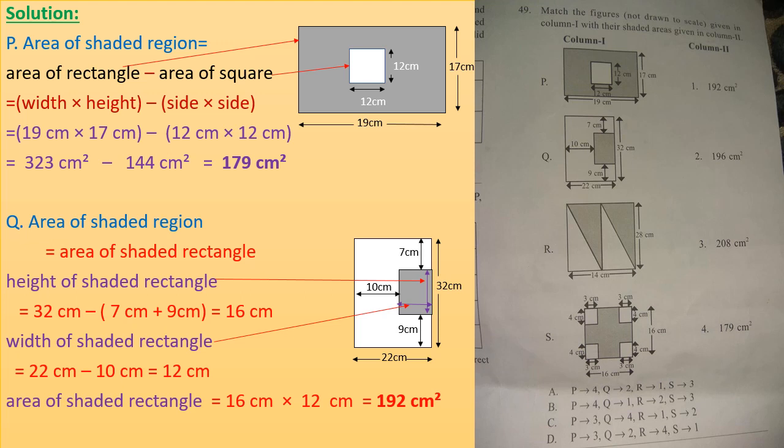In option P, there is a rectangle of width 19 cm and height 17 cm. Inside the rectangle is a square of side 12 cm. Area of shaded region equals area of rectangle minus area of square. Area of rectangle is 19 into 17 equals 323 cm square, minus area of square 12 into 12 equals 144 cm square, giving 179 cm square. So option P matches with option 4 in column 2.